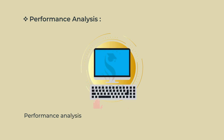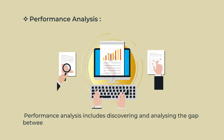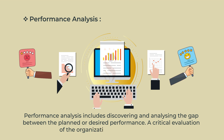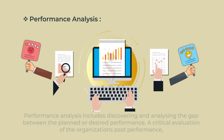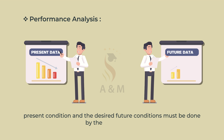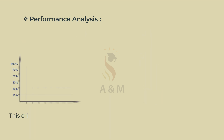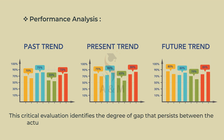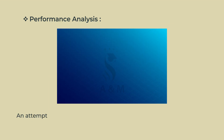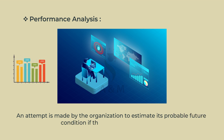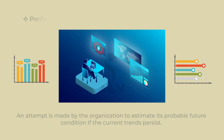Fourth step is performance analysis. Performance analysis includes discovering and analyzing the gap between the planned or desired performance. A critical evaluation of the organization's past performance, present conditions and the desired future conditions must be done by the organizations. This critical evaluation identifies the degree of gap that persists between the actual reality and the long-term aspirations of the organization. An attempt is made by the organization to estimate its probable future condition if the current trend persists.